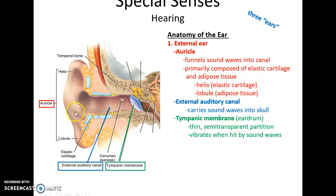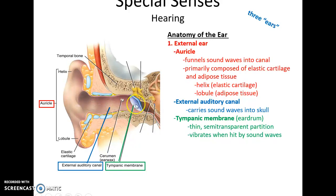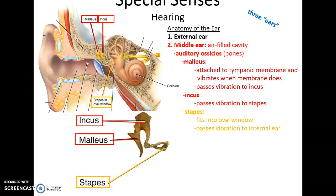Looking at the auricle, you see the more rigid upper two-thirds — that is the helix, made primarily of elastic cartilage. And then the lower quarter or so, the lobule, which is primarily adipose tissue. The external auditory canal then carries those sound waves deeper into the skull until it hits a structure called the tympanic membrane — the eardrum. The tympanic membrane is a thin, semi-transparent structure that vibrates when the sound waves hit it. Sound waves are pressure waves of gas, air.